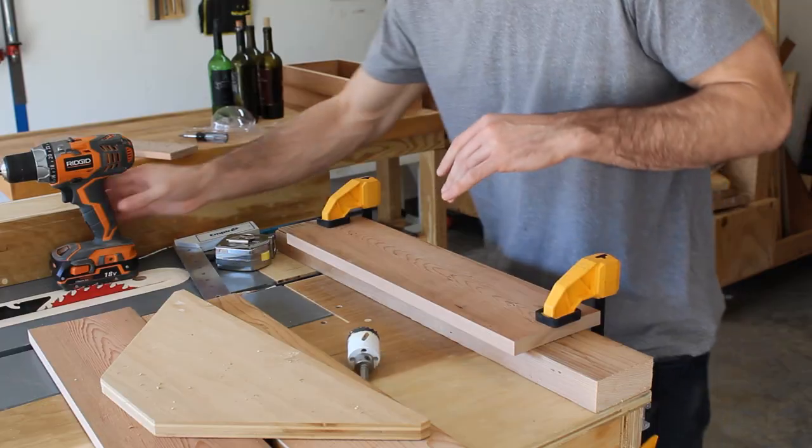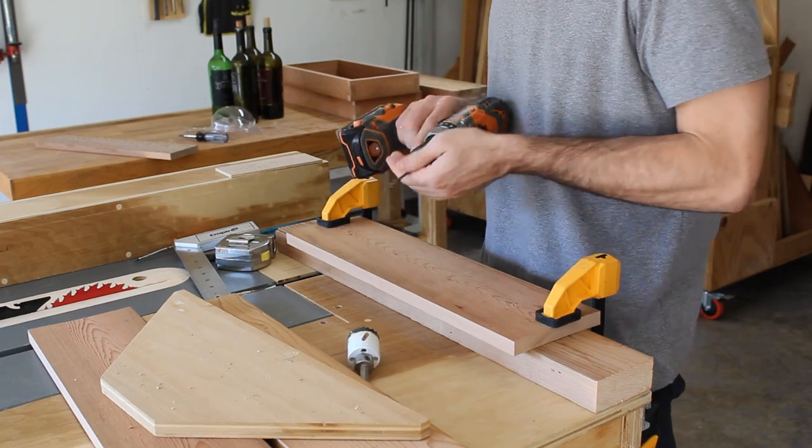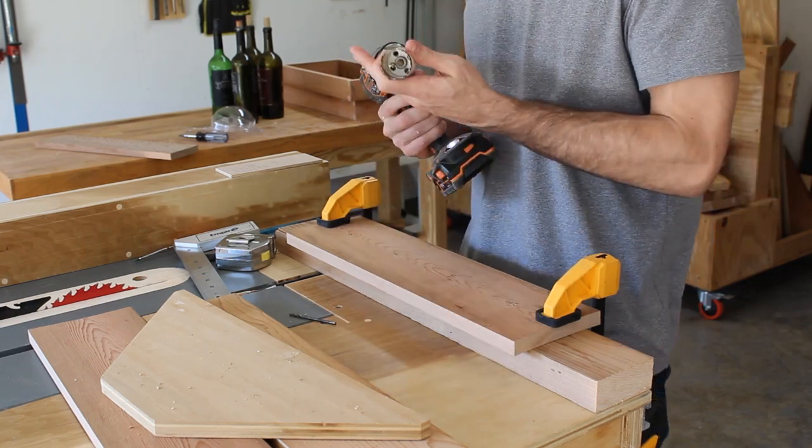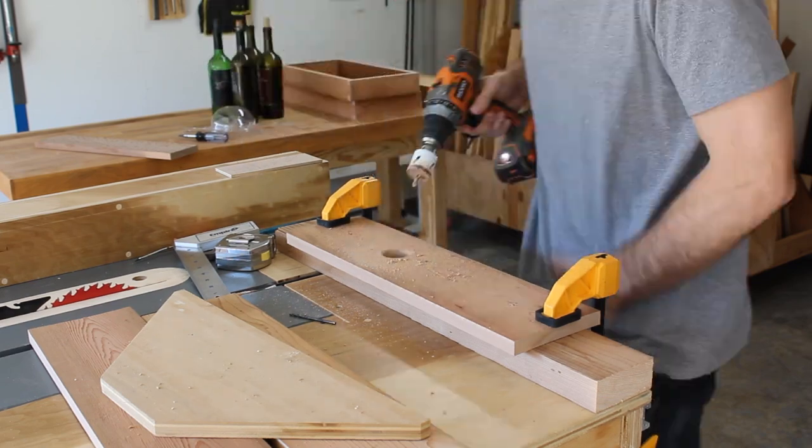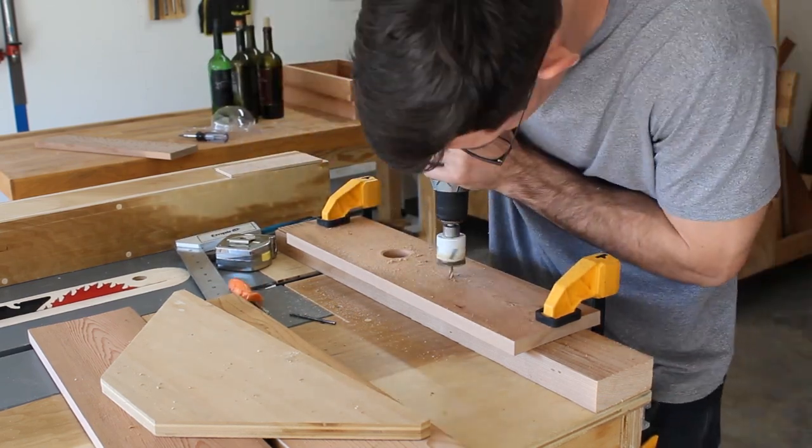After finishing gluing up the top and bottom trim pieces, I moved on to the cross members where the wine bottles would sit. To make the cross members, I used a hole saw to drill holes down the center of these boards.